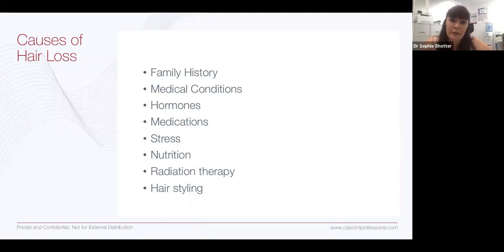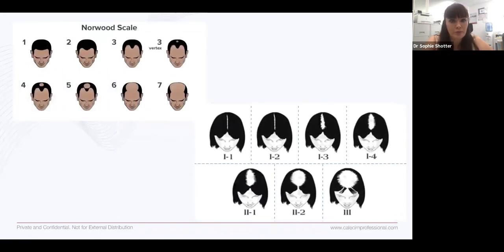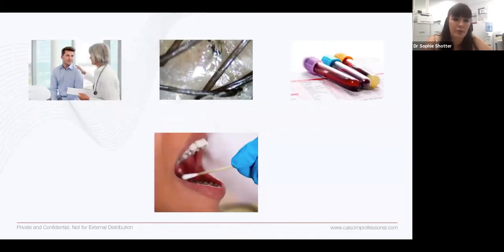There are many, many different causes of hair loss and family history is very important. It's something always to start with. Medical conditions such as diabetes can cause hair to fall out. Hormones, both thyroid and also testosterone can drive hair loss in men, and menopause in women are all important. So I think hormone profiling can be very, very helpful. Medications, it's important to take a thorough medication history. And then things like stress and nutrition can also drive hair loss as well as smoking. Smoking, we think, by affecting the circulation to the scalp. Radiation therapy can cause hair to fall out and hair styling as well.